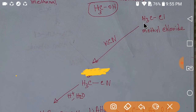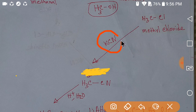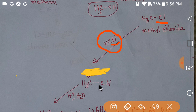Methyl chloride is the mother compound for increasing the number of carbons in the chain. To increase carbon, you add potassium cyanide (KCN). When you add potassium cyanide to methyl chloride, the Cl is replaced by a CN cyanide group, and you get ethyl nitrile.